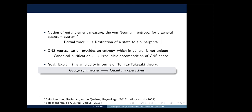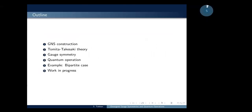Our goal is to explain this ambiguity in terms of the modular theory of Tomita-Takesaki. We obtain an emergent gauge symmetry that defines a family of quantum operations in the emergent system. To show that, I will review the GNS construction, the Tomita-Takesaki modular theory, show how the emergent gauge symmetry appears, and how to define quantum operations. Finally, I will give the example of a bipartite system with a tensor product space.